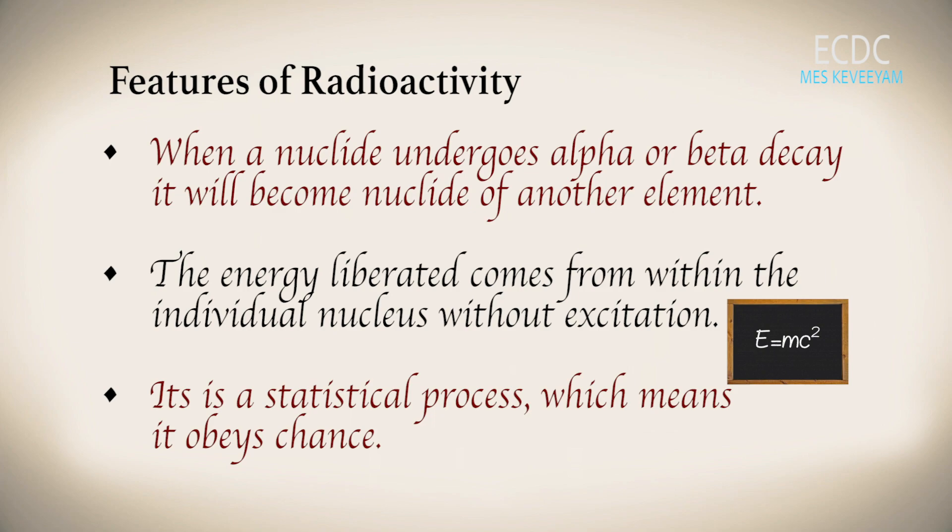Features of radioactivity: When a nuclide undergoes alpha or beta decay, it will become a nuclide of another element due to change in atomic number, which is the number of protons. The energy liberated comes from within the individual nucleus without excitation through the process E=mc². It is a statistical process, which means it obeys chance.